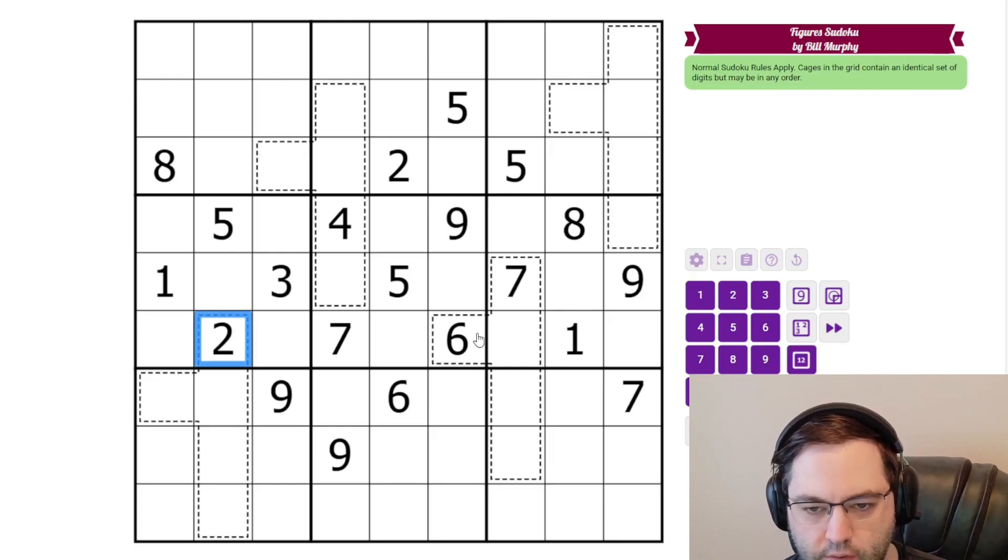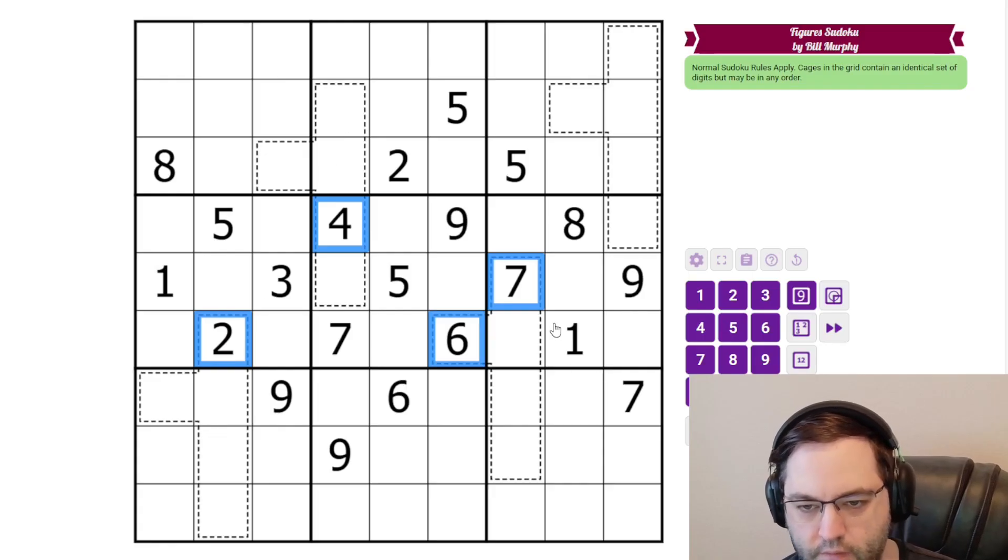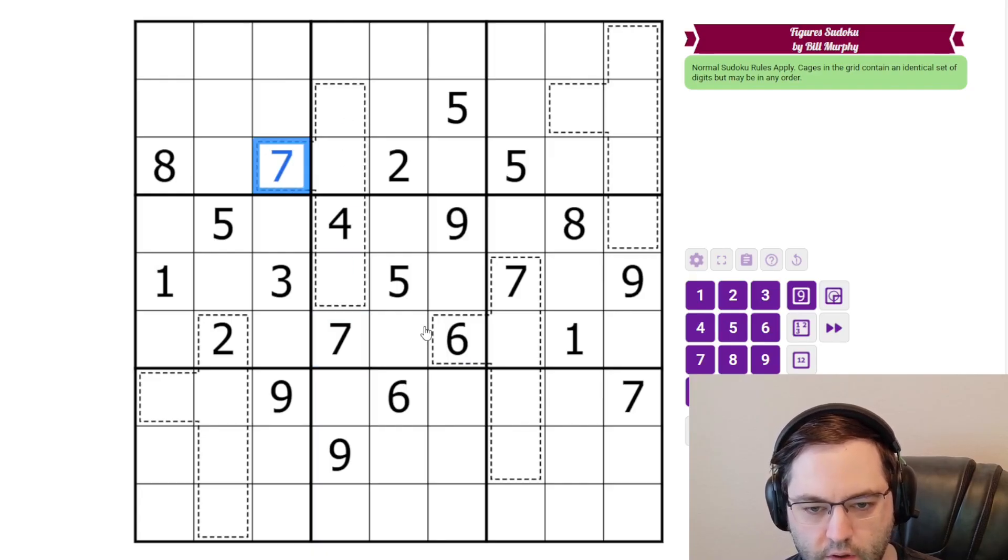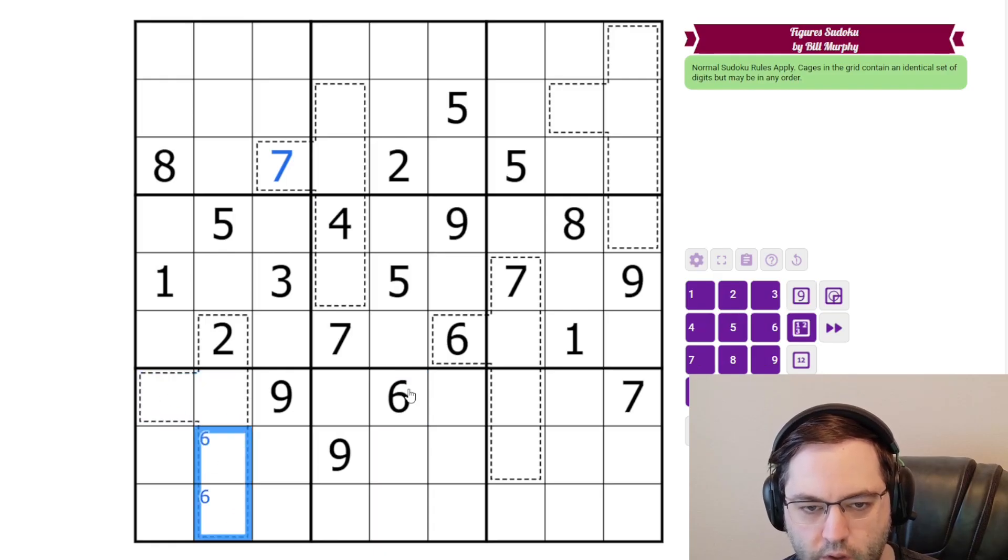So we can see there's a two, a four, a six, and a seven in one of these cages. So those digits must appear in all of the cages. And we have a mystery fifth digit. So let's see what we can do with the digits that we already know about. Seven can't go in these cells, so it must go here. Six can't go in these, so it must go in one of these.